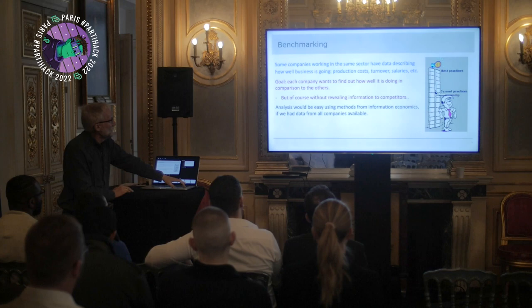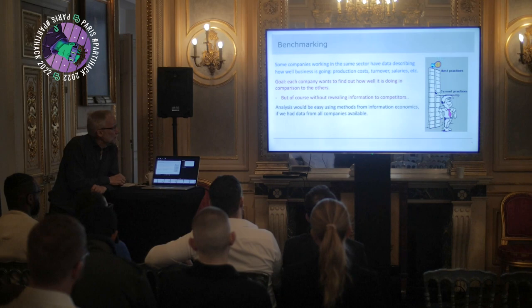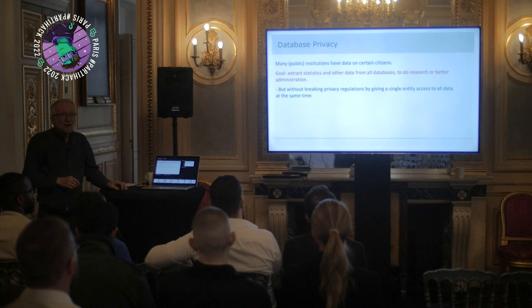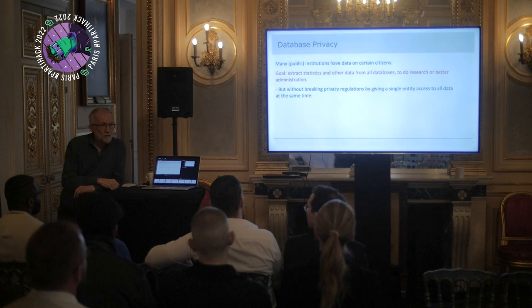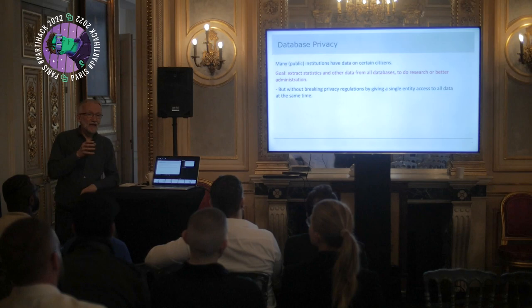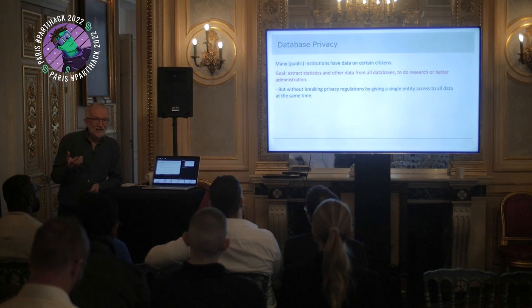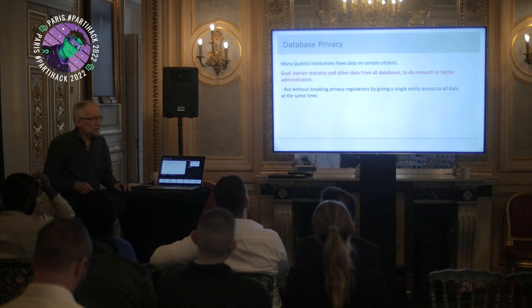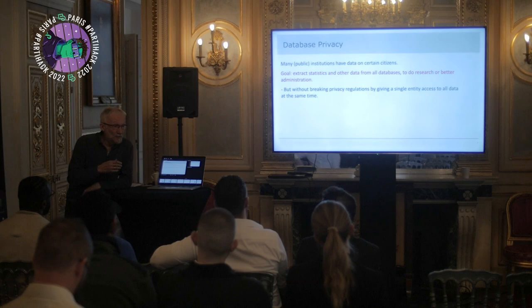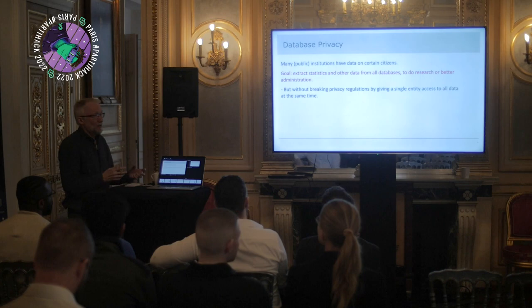Then there's database privacy. Lots of people know stuff about us — in the public sector in Denmark, at least, there are all kinds of institutions that know things: tax authorities, health authorities, et cetera. If all these databases were put together, you could do all sorts of interesting things, like statistics connecting diseases to lifestyles, and various administrative advantages. But of course this doesn't happen because, at least in Europe, GDPR comes along and says you can't do this — it's just illegal. So although there are things we could do if we had everything available, usually we just can't.